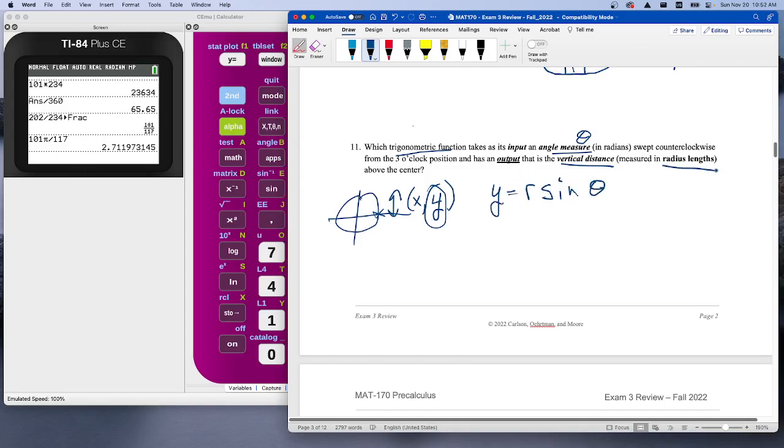Now, if they want it in radius length, that's if the radius is not 1. If you want it just in terms of radius length, then it's just sine theta itself. So that's 11.